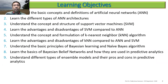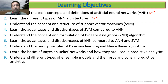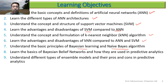The learning objectives are: first, understand the basic concept of neural networks (NN) and artificial neural networks, and learn different types of NN architecture — these will be discussed more later in the deep learning path. Then understand the concept and structure of support vector machines, one of the popular AI and machine learning techniques. We'll compare SVM and NN, discuss KNN and its advantages, learn naive Bayes-based algorithms, and understand different types of ensemble models and their pros and cons in predictive analytics.